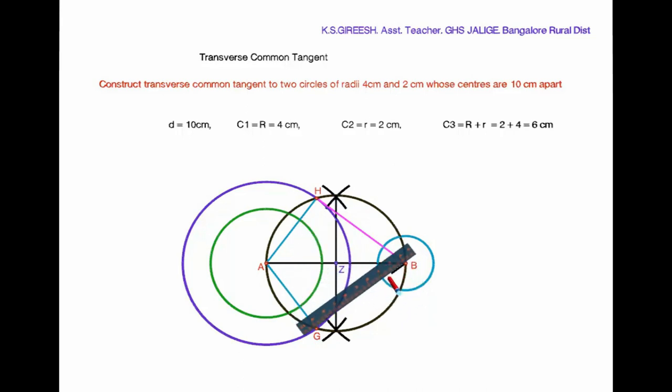Mark the intersecting points of C1 circle with line segment AH and AG as J and K respectively.